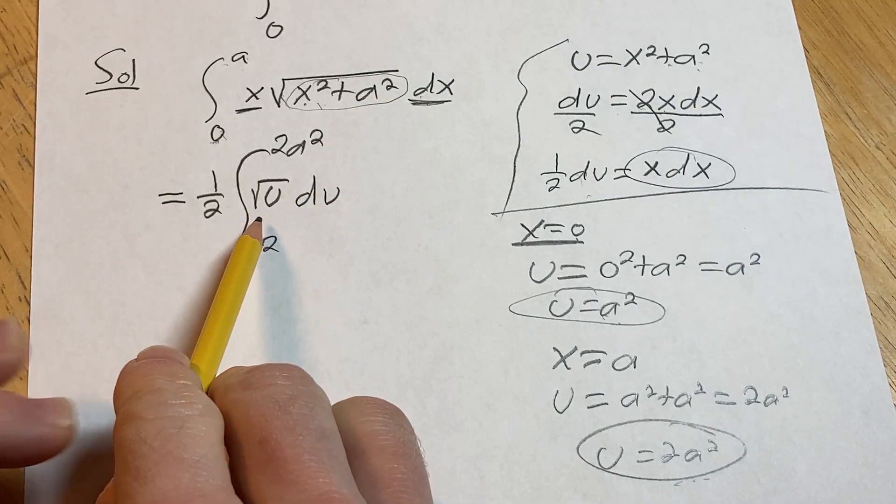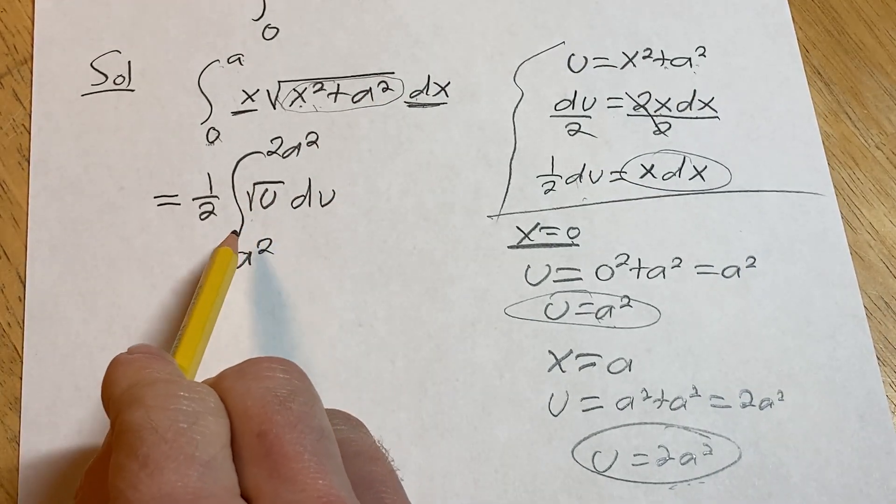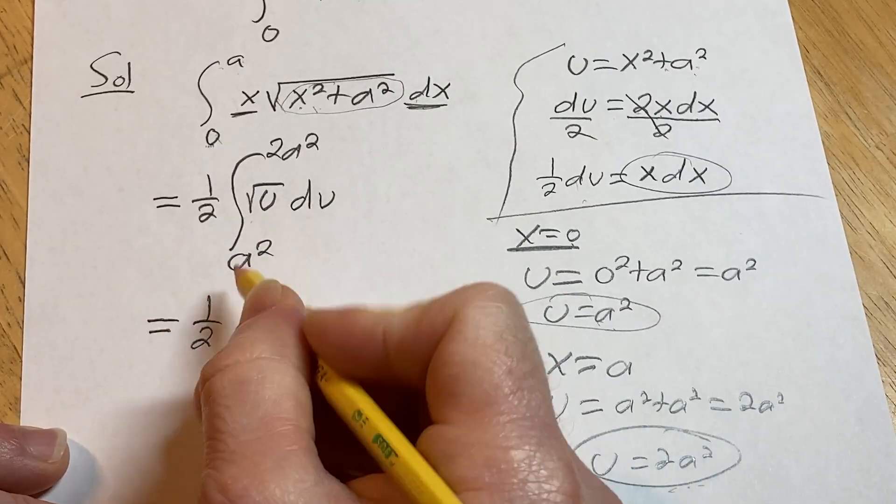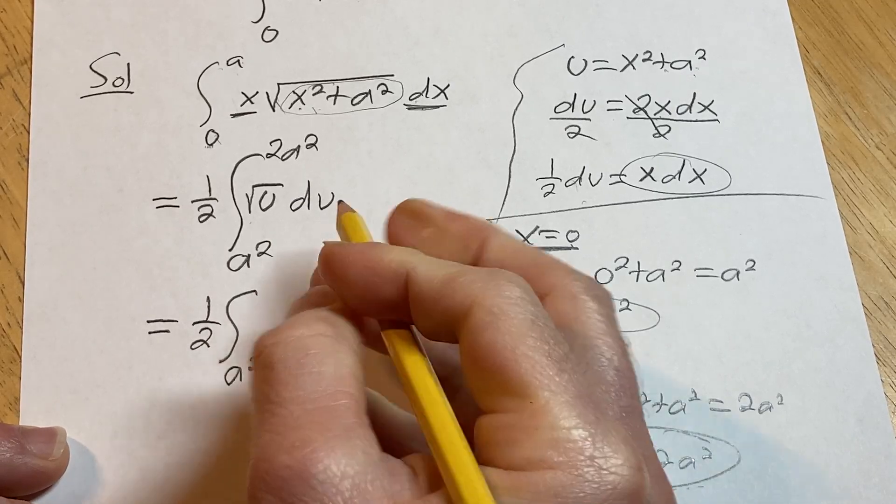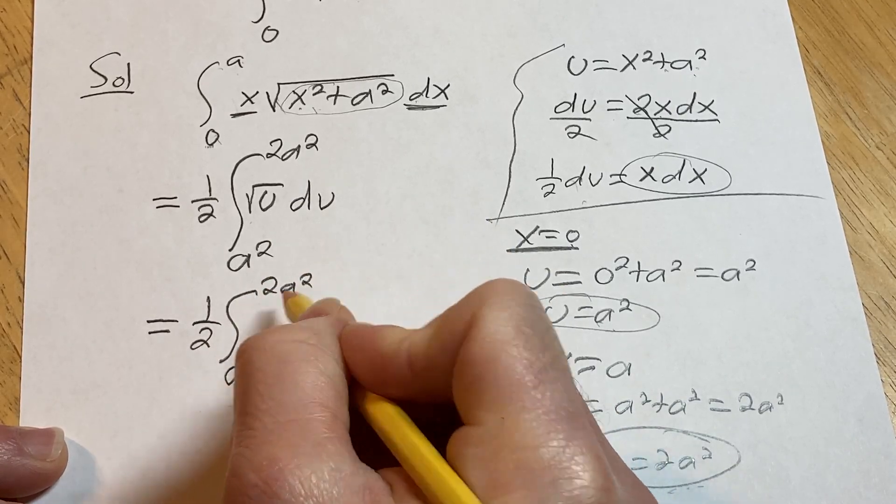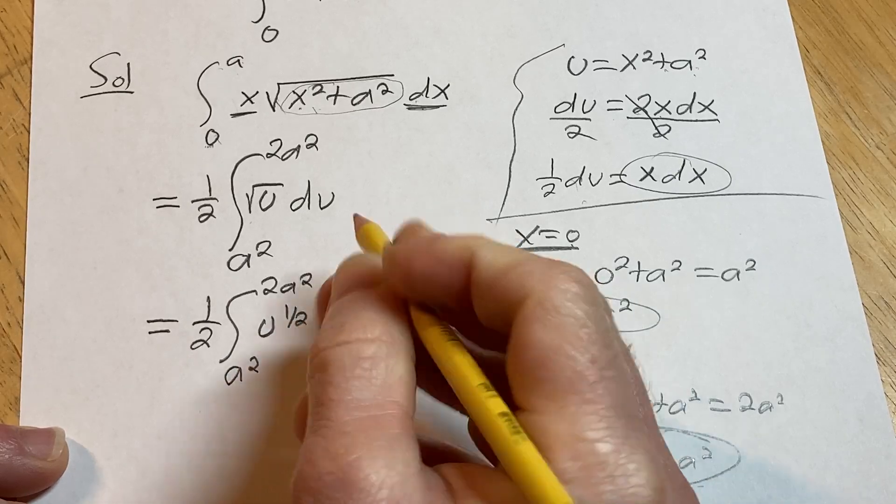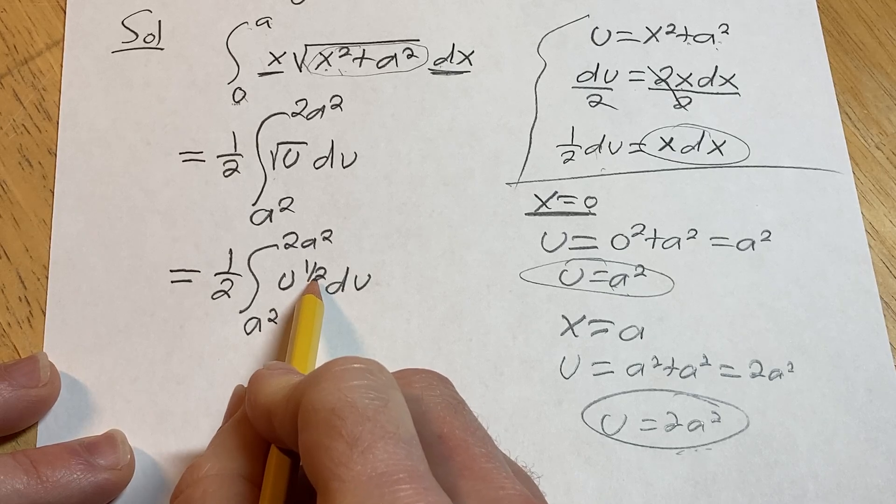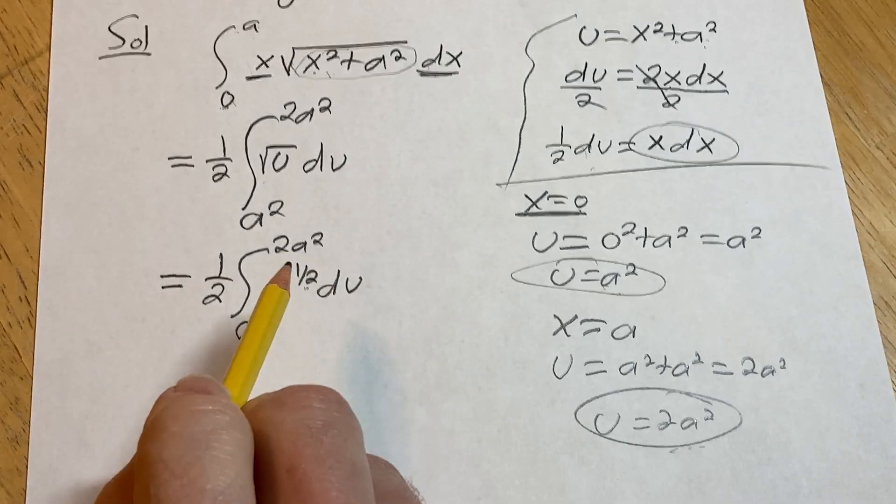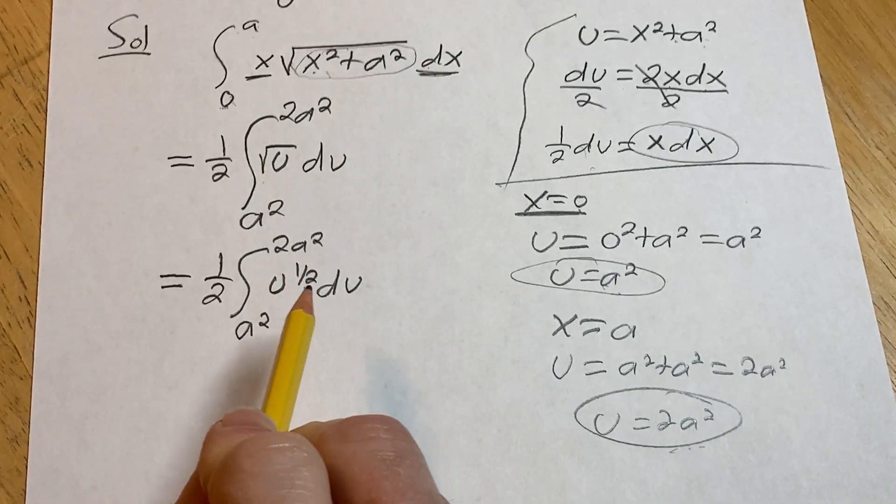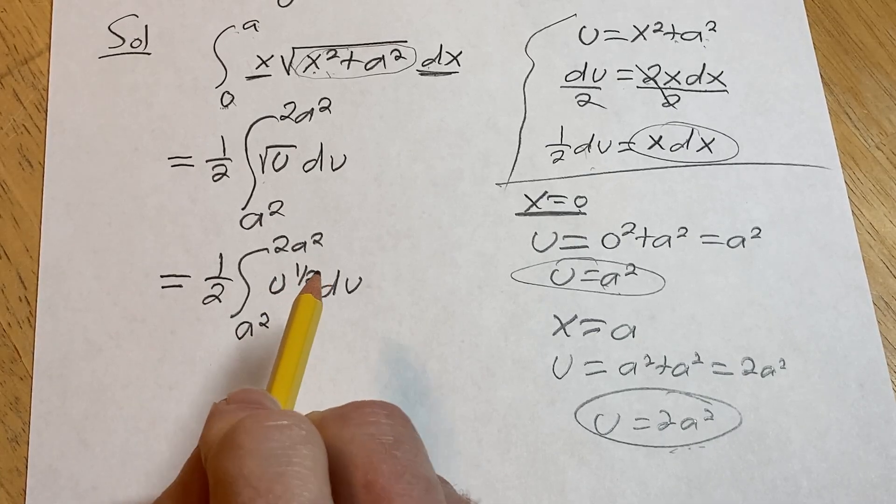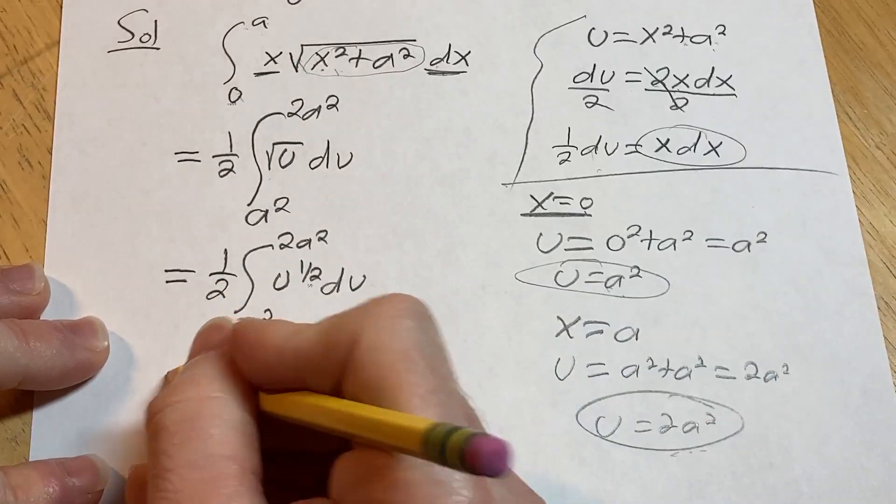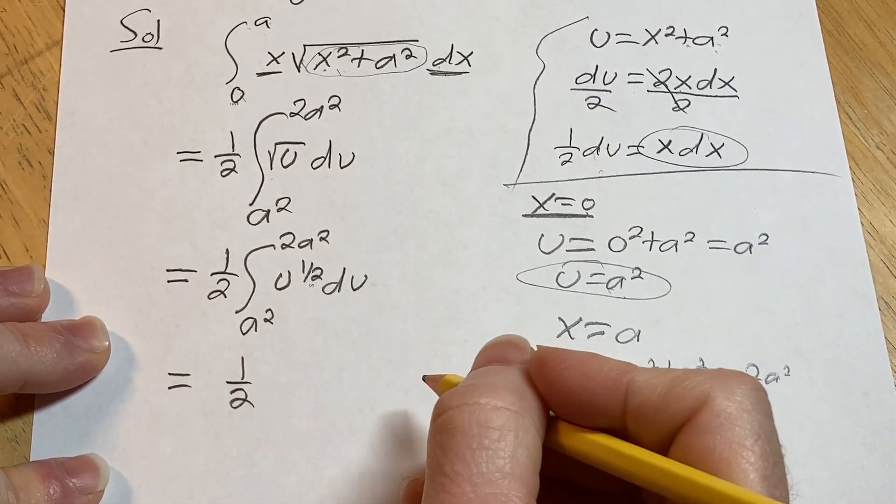To integrate this, we want to write it as u to a power. So the square root of u is really u to the 1 half. So this is equal to 1 half, definite integral from a squared to 2a squared of u to the 1 half du. And the power rule now says that we can add 1 and divide by the result. You can always use the power rule when it's something to a power, unless the power is negative 1. In that case, you're going to get the natural log of the absolute value of whatever is being raised to a power.